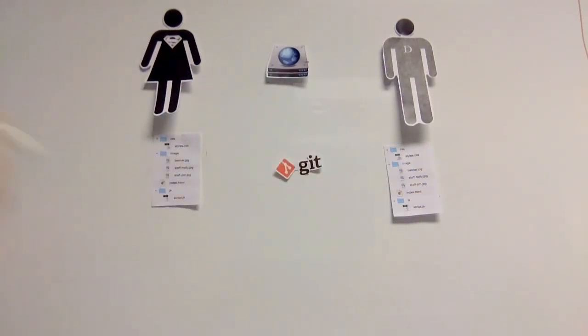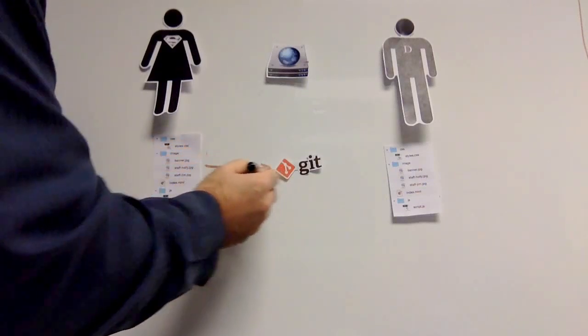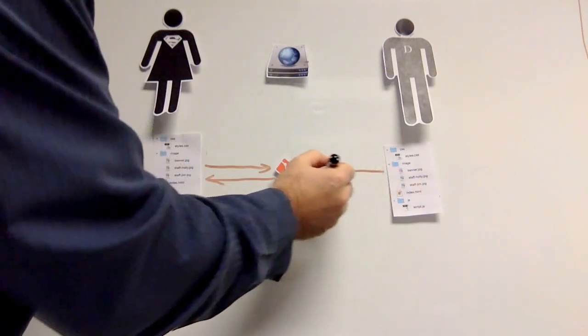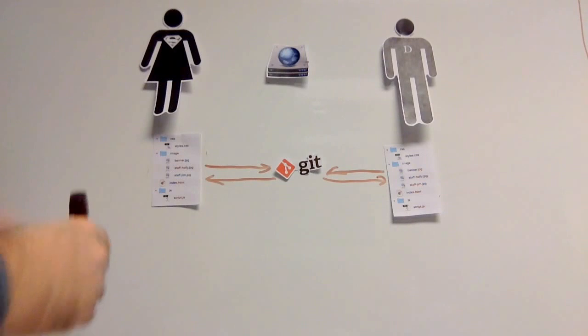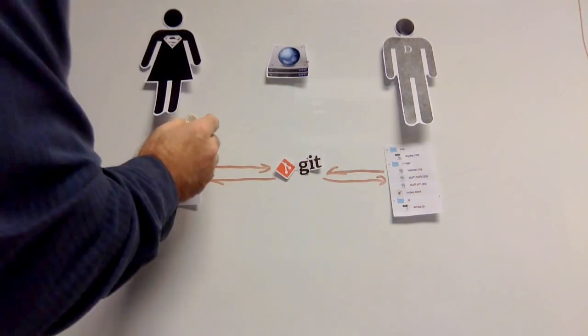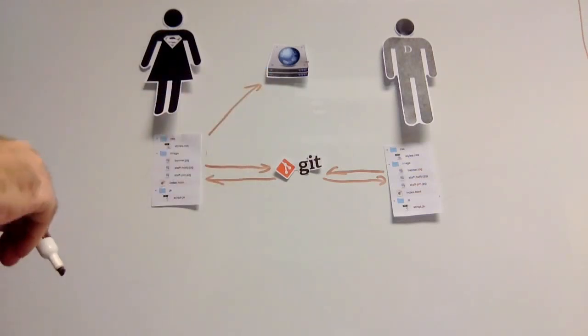What Git will do is it will allow us to push files over and receive the changes back. So Jim can push a new banner image over and receive the new script changes that Holly has made. Now, this also allows us to have updated files all the time. So at any time, Jim or Holly can push all the files up to the server and know they have the latest versions.